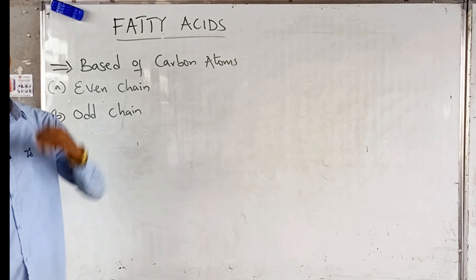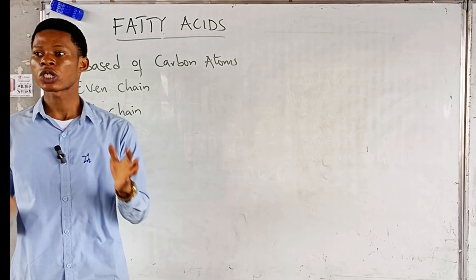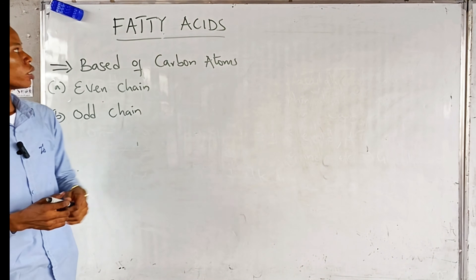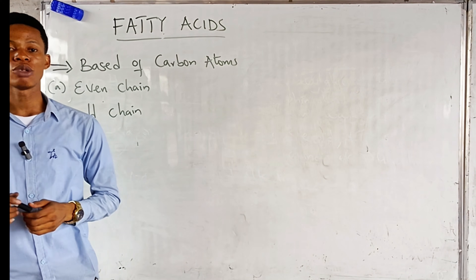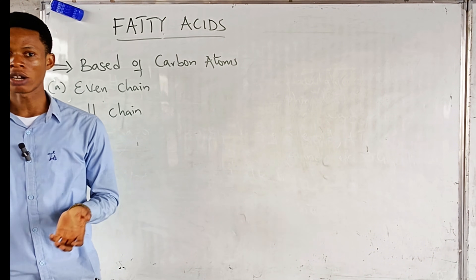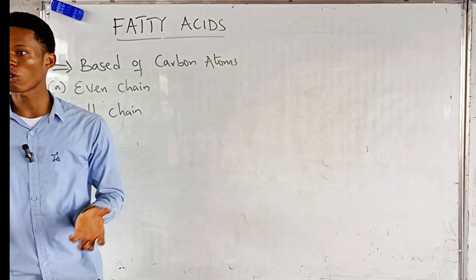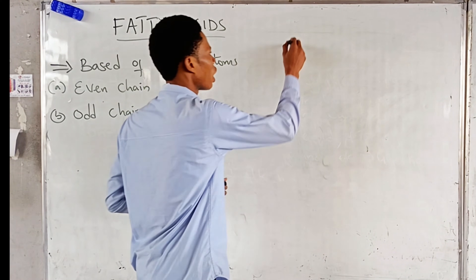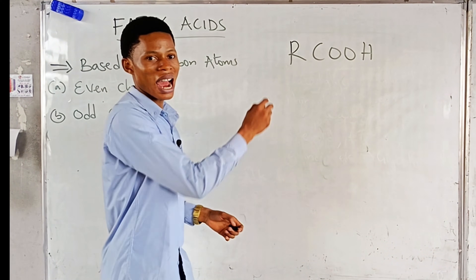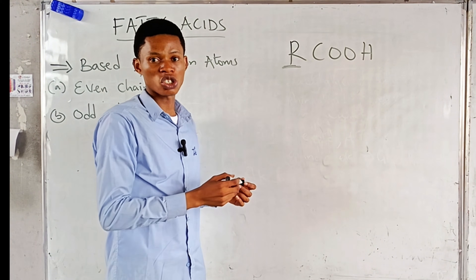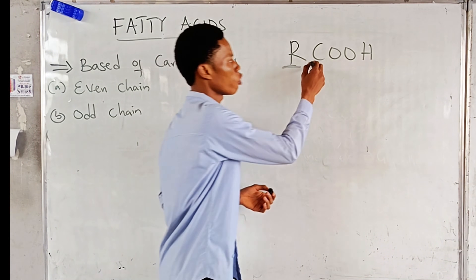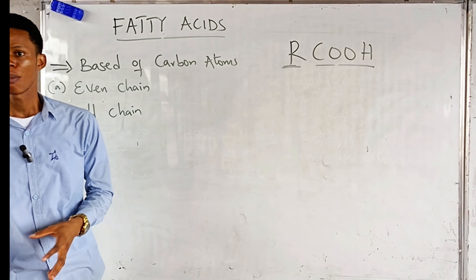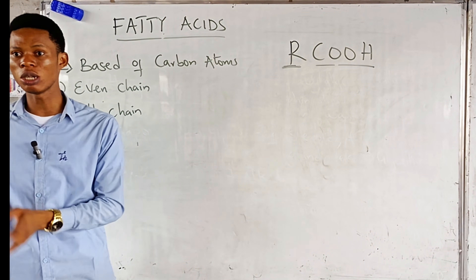Let's look at fatty acids. Remember that simple lipids are composed of fatty acids and an alcohol. Fatty acids are carboxylic acids — in chemistry, examples include ethanoic acid, propanoic acid, and butanoic acid. When we talk about fatty acids, we are talking about carboxylic acids with the general formula R-COOH, where R represents the alkyl chain and -COOH is the carboxylic acid functional group. Fatty acids are considered derived lipids because they are obtained from the hydrolysis of simple lipids or compound lipids.